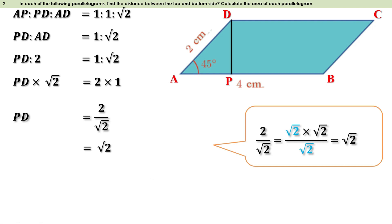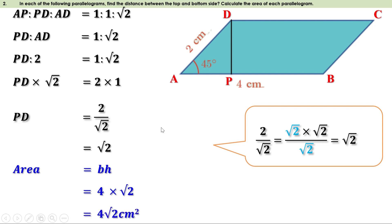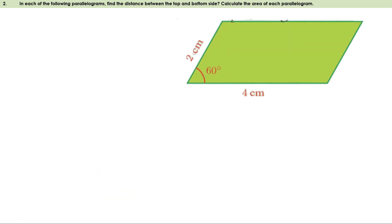Now we have to find the area of this parallelogram. We know the area of a parallelogram is B × H, where B is a side and H is the distance from that side to its opposite side. Here B can be taken as AB, which is 4 centimeters, and H is PD, which is √2 centimeters. Replacing the values, we get 4 × √2 = 4√2 cm². That means the area of this parallelogram is 4√2 cm².